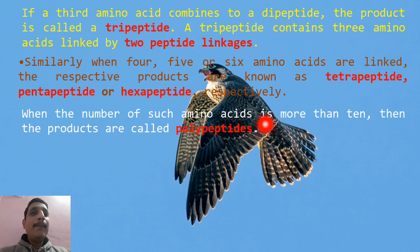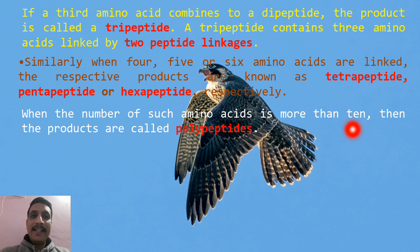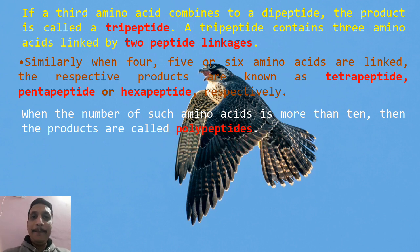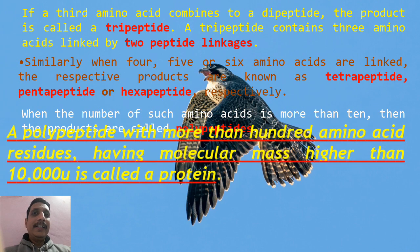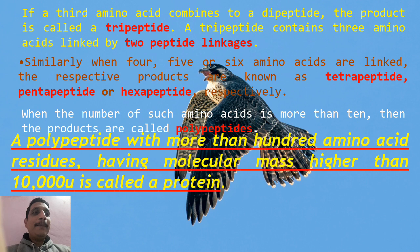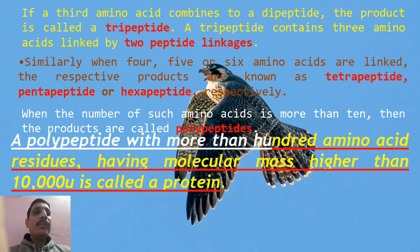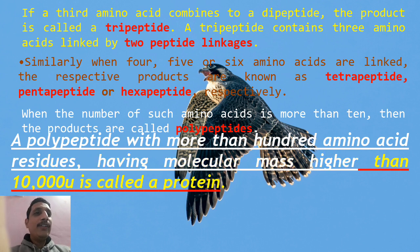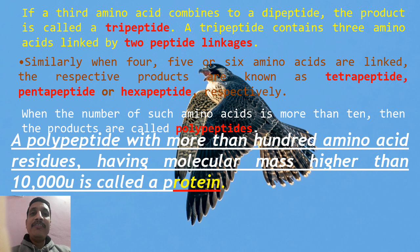When the number of such amino acids is more than 10, the product is called a polypeptide. This polypeptide is a protein. Protein is a polypeptide with more than 100 amino acid residues having molecular mass higher than 10,000 mu — that is called a protein.